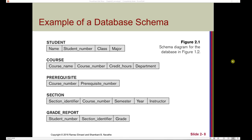Here's an example of a database schema. Notice that there aren't any pieces of data included — simply just the skeleton structure of what each component or construct of the schema is. This is our university mini-world. We have a representation of a student, a course, a prerequisite, a section, and a grade report. Notice that there isn't any data included — we only have different attributes of each entity. For example, a student has a name, a student number, a class, and a major. For a course, we're keeping track of a course name, course number, credit hours, and department.